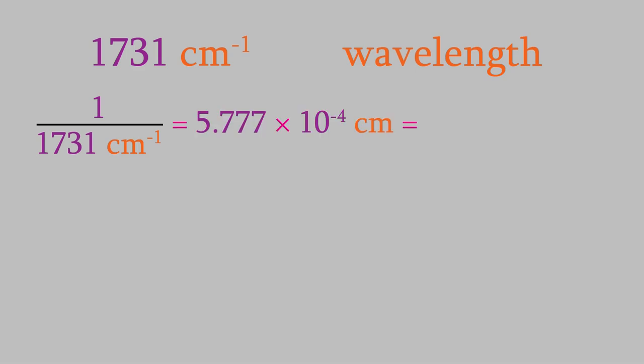Anyway, let's change this into SI units for wavelength, frequency, and energy. Changing wavenumbers to wavelength is very easy. We just take the reciprocal. When we do that, we get 5.777 times 10 to the negative 4th centimeters, which is 5.777 times 10 to the minus 6th meters. So, that's the wavelength.